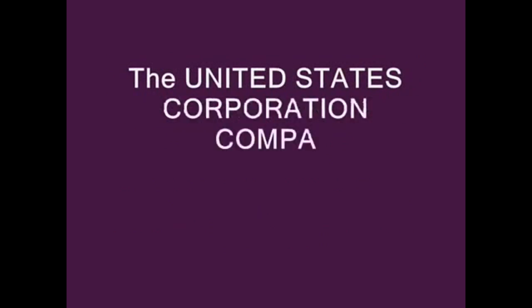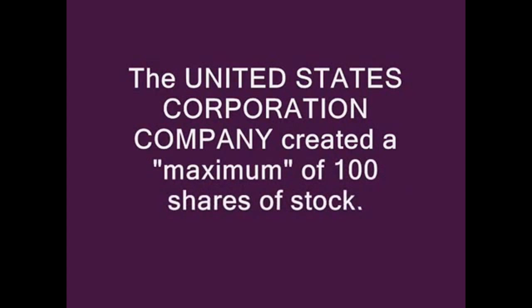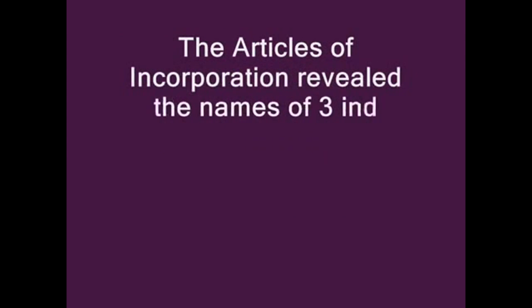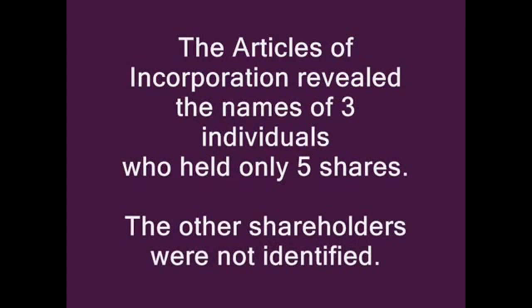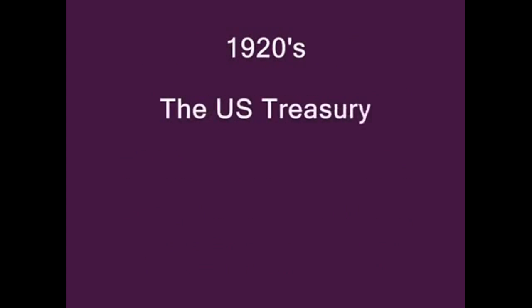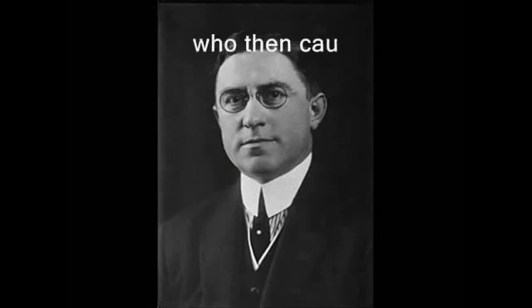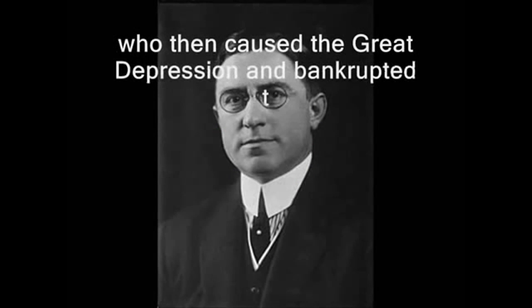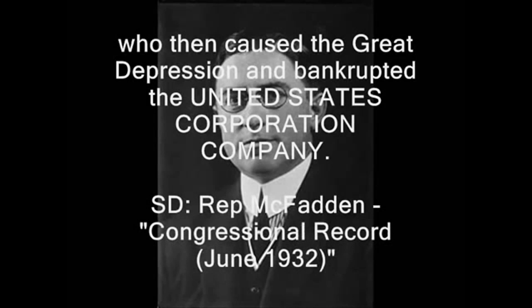The United States Corporation Company created a maximum of 100 shares of stock. The Articles of Incorporation revealed the names of three individuals who held only five shares; the other shareholders were not identified. 1920s: The U.S. Treasury was raided by the private Federal Reserve Bank, who then caused the Great Depression and bankrupted the United States Corporation Company. Source: Representative Lewis McFadden, Congressional Record, June 1932.